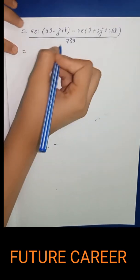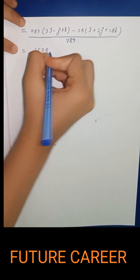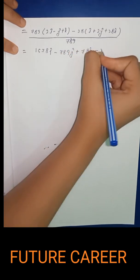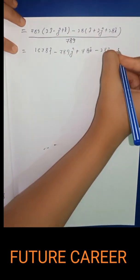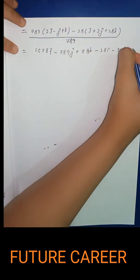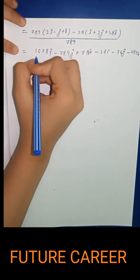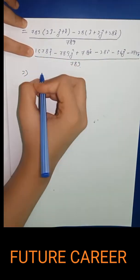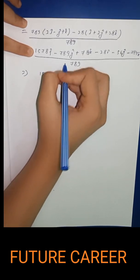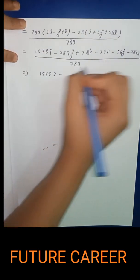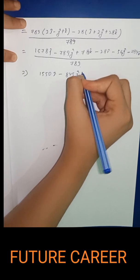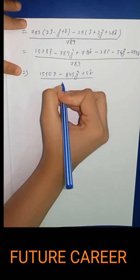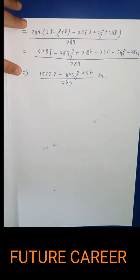Expanding and combining terms: (1578 minus 28) gives 1550 for the i cap component, giving 1550 upon 789 i cap; the j cap component yields minus 56 upon 789 j cap; and the k cap component gives 789 minus 784, which is 5, so plus 5 upon 789 k cap. That is our final answer. Thank you for watching this video.